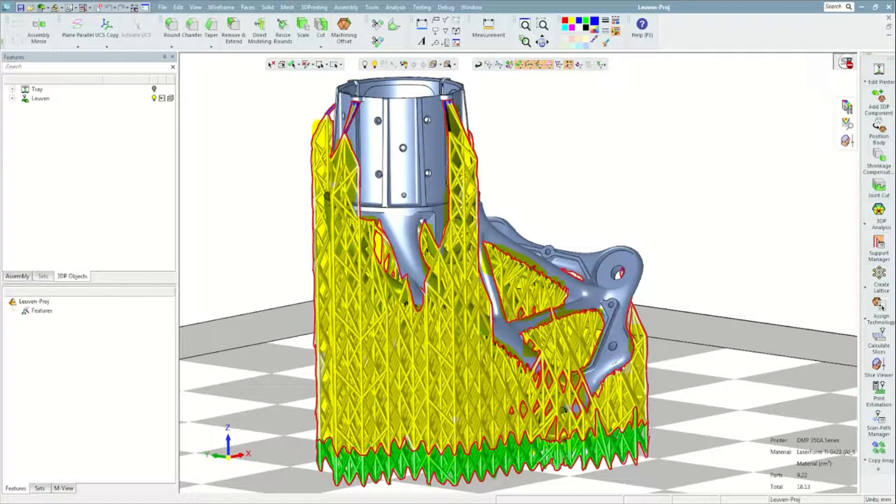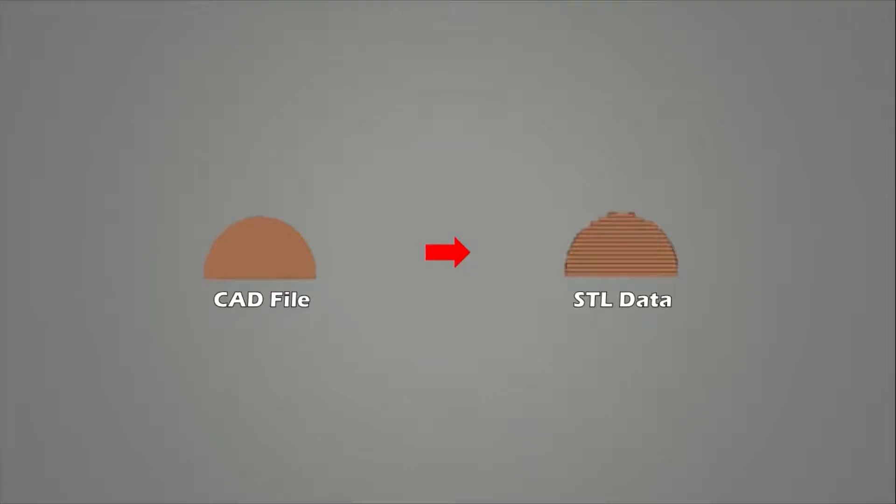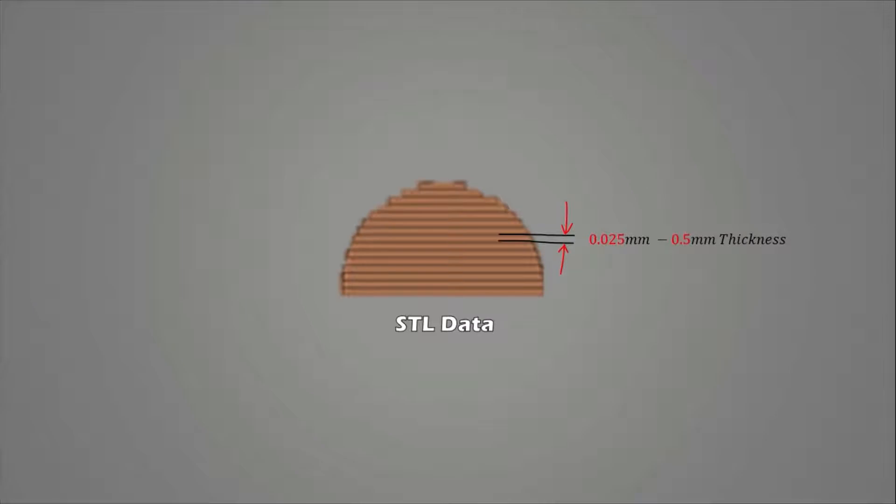After obtaining the required digital files, the software translator converts the CAD data into an STL file. The control unit slices the model and support structure into a series of cross-sections, from 25 microns to half millimeter thick.